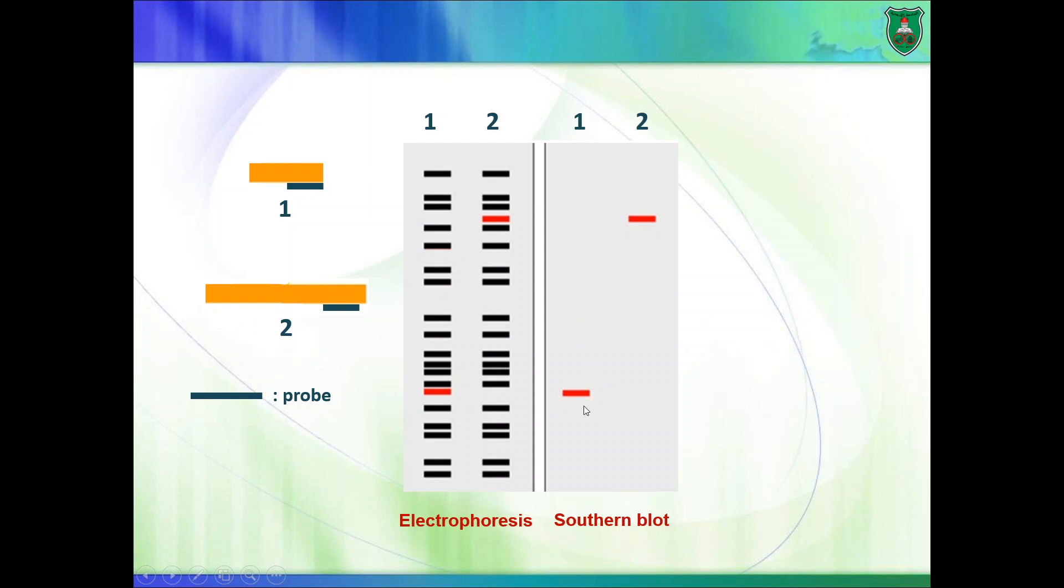That tells us that these two individuals are really different. They have different DNA sequences or DNA fragments. So by southern blotting, we know that these two individuals have DNA fragments that contain a certain sequence that is complementary to a probe.